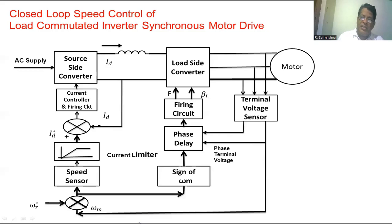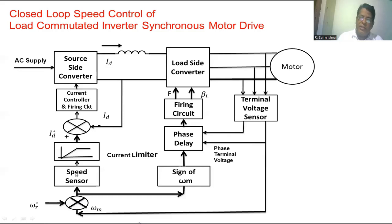If the reference speed is decreased, the actual speed of the synchronous motor is higher, so the speed error becomes negative. When the speed error is negative, the commutation advance angle is set for regenerative braking operation of the load side converter, and the motor speed decreases. Once the speed decreases, the error between the reference speed and actual speed reduces. This is again processed by the speed controller, which sets the current limiter to a value where the load torque equals the developed torque in the synchronous motor. In this manner, we change the speed of the synchronous motor from one value to another at a constant commutation advance angle and maximum torque development, so that the transient time of the motor operation is minimized.